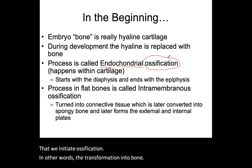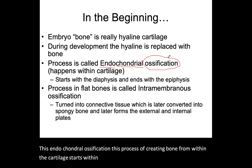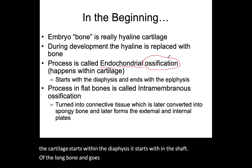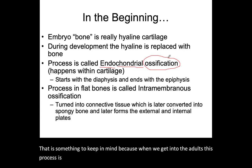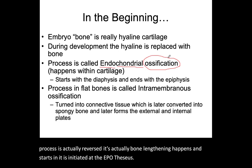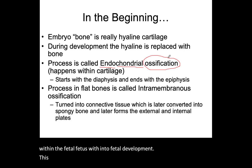During fetal development, this endochondral ossification — this process of creating bone from within the cartilage — starts within the diaphysis, within the shaft of the long bone, and goes outward into the epiphysis. In adults, this process is actually reversed: bone lengthening is initiated at the epiphysis and moves down towards the diaphysis. But within the fetus, the process happens within the diaphysis and then extends outward into the epiphysis.